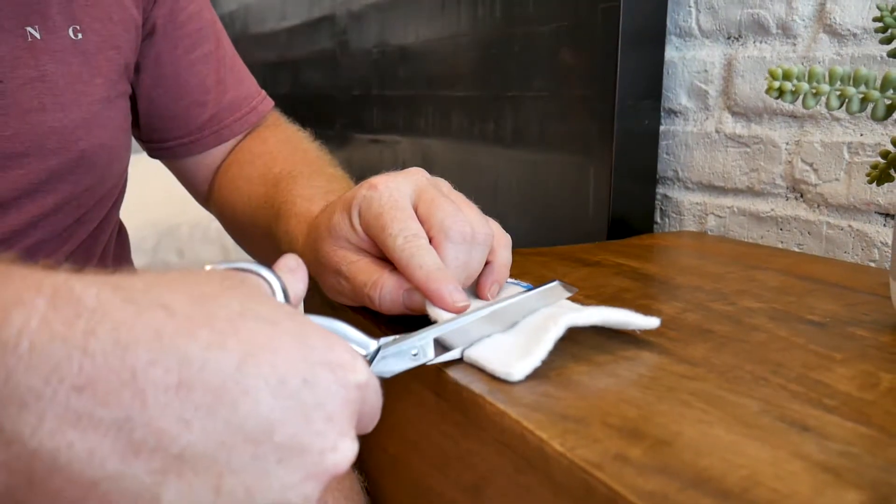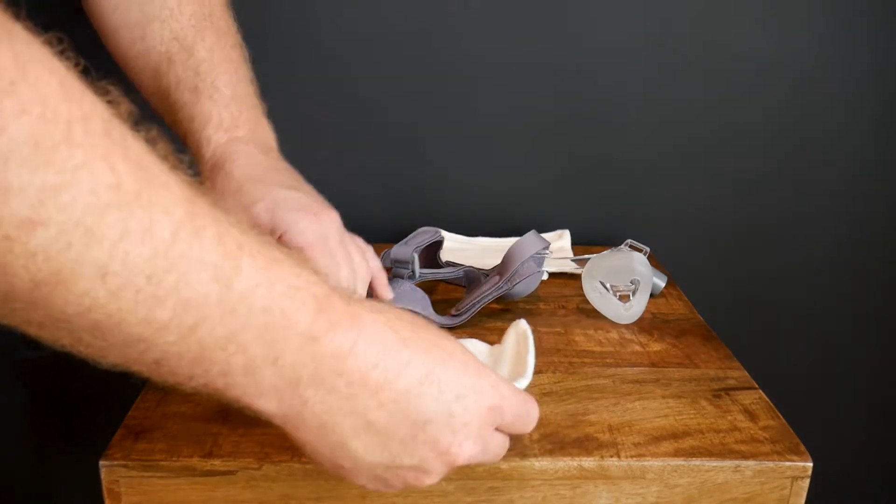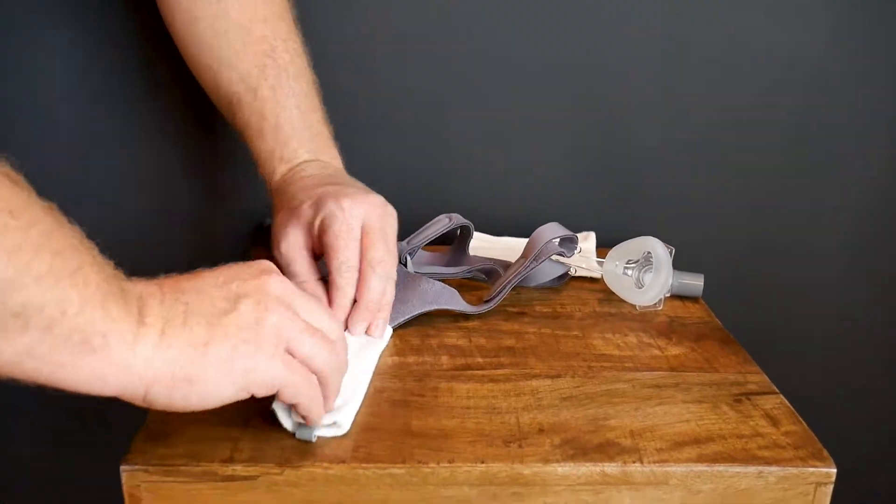For a more tailored fit, simply cut to size at the thread lines provided. To install, lay the covers open on a flat surface and place your headgear on top.